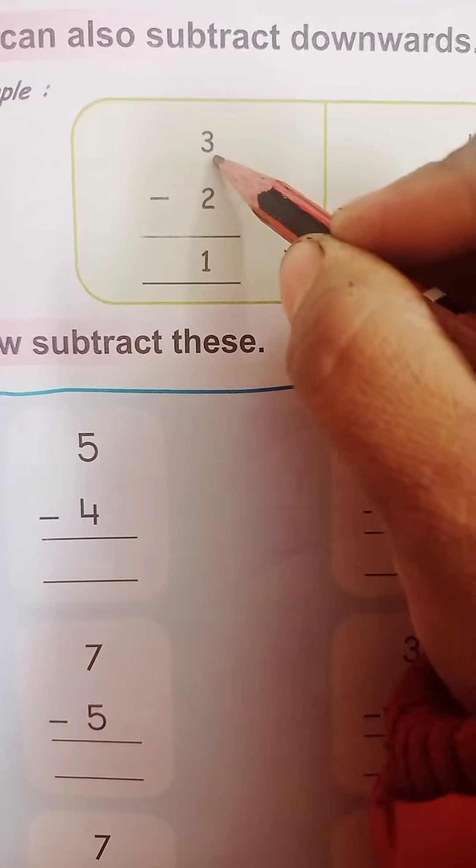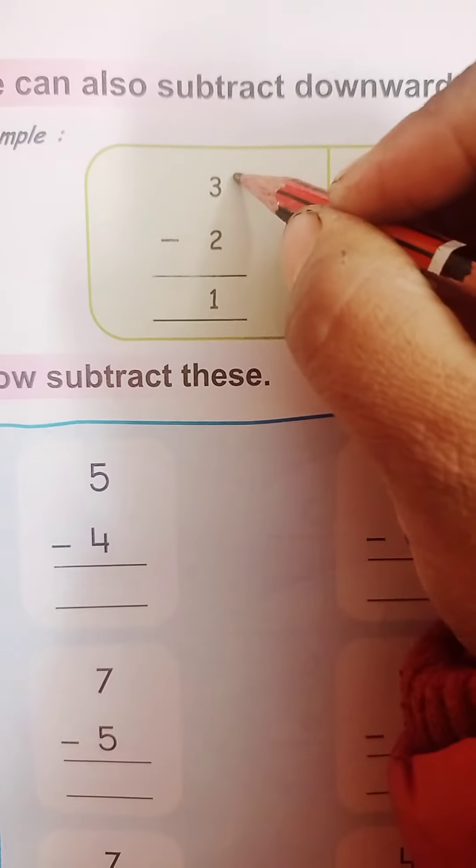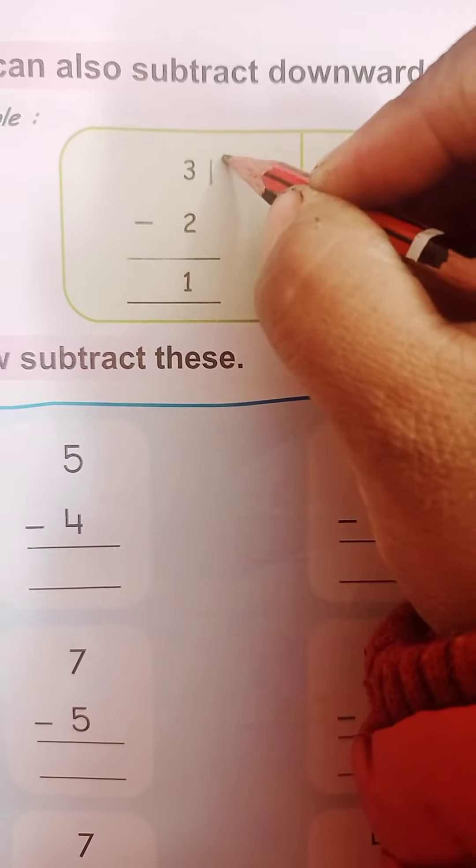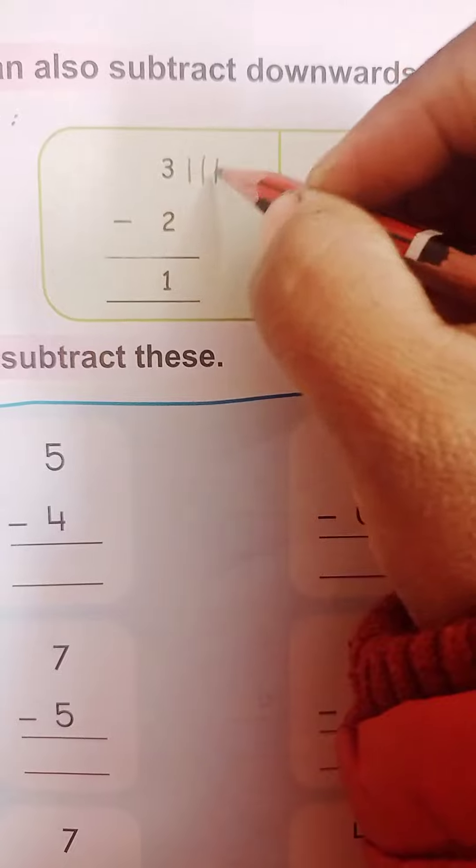Now, which number is this? This is 3. Then, what we will do? We will draw 3 lines here, okay? 3 lines here.